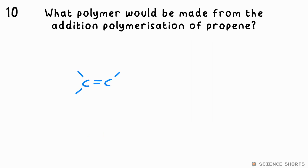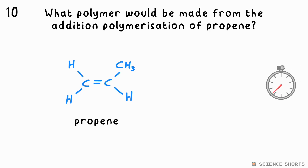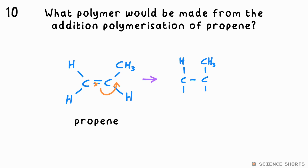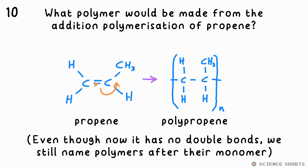Question 10. What would the polymer made from the addition polymerisation of propene be? All we do is break the double bond and put bonds coming out of brackets with an n to show that this unit repeats. The monomer is propene, so the polymer is called polypropene — sometimes also called polypropylene.